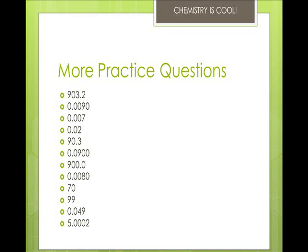Okay, 903.2 is four sig figs, 0.0090 is two significant figures, 0.007 is one, 0.02 is one, 90.3 is three, 0.0900 is three, 900.0 is four, 0.0080 is two, 70 is one, 99 is two, 0.049 is two, and 5.0002 is five.